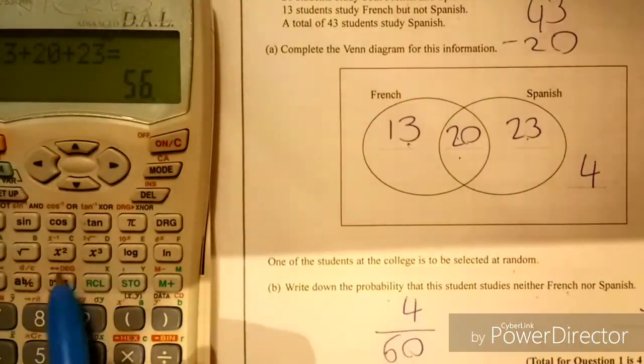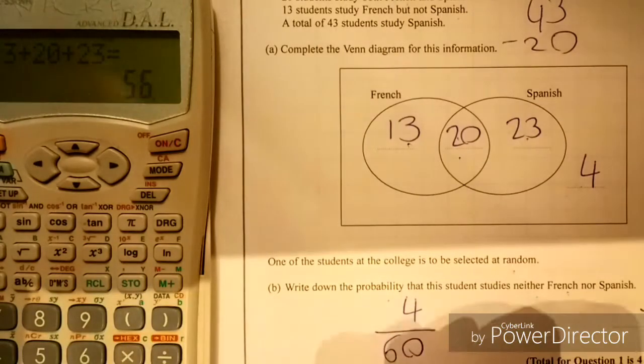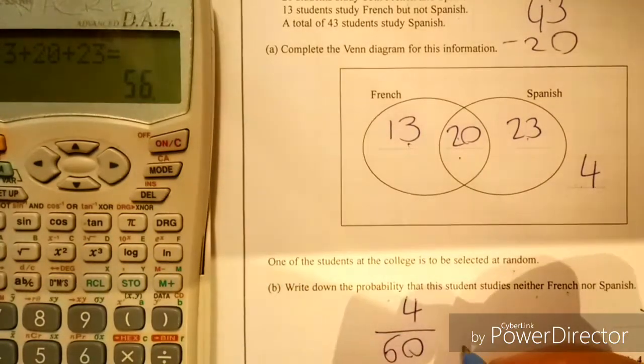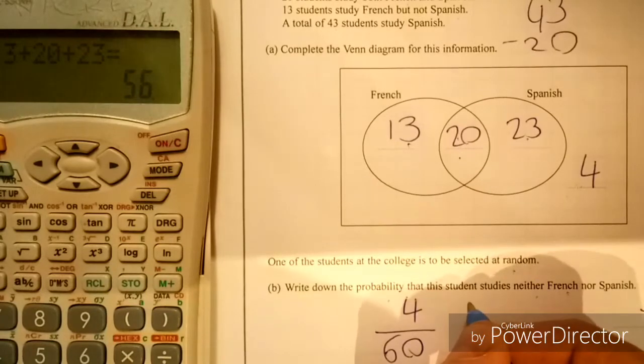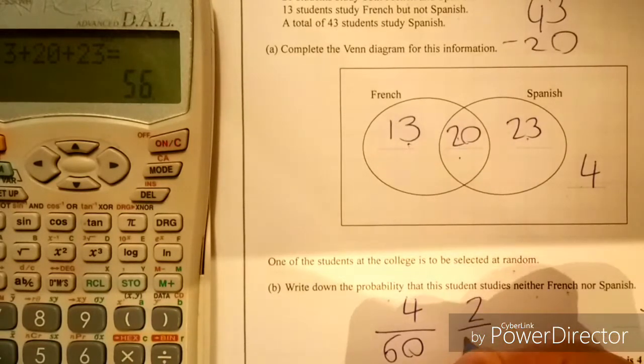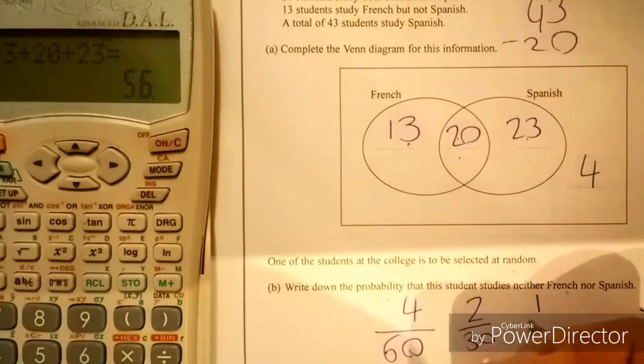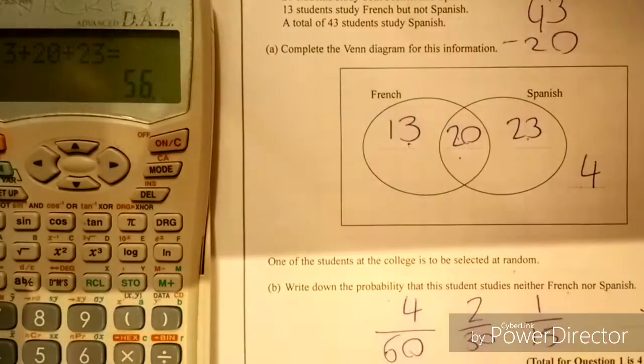4 out of 60. Now if you've got a decent calculator you can just type in 4 out of 60 and it'll cancel it down. But you don't need to cancel it down. But if you were, you could do 2 out of 30, we can cancel it down to 1 out of 15. Any answer is acceptable.